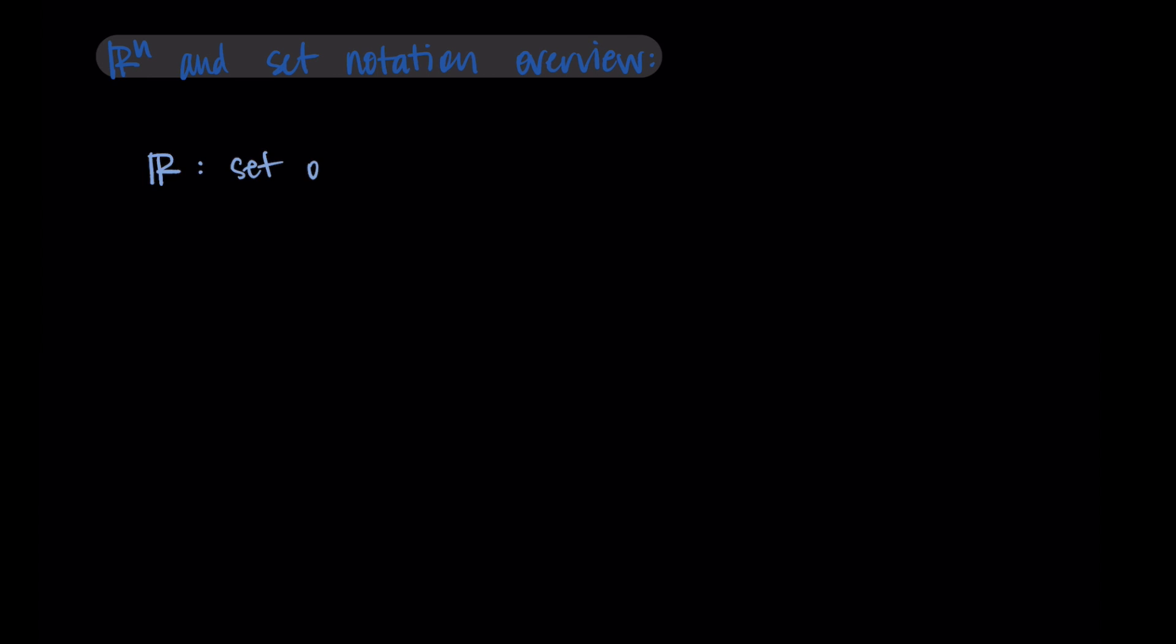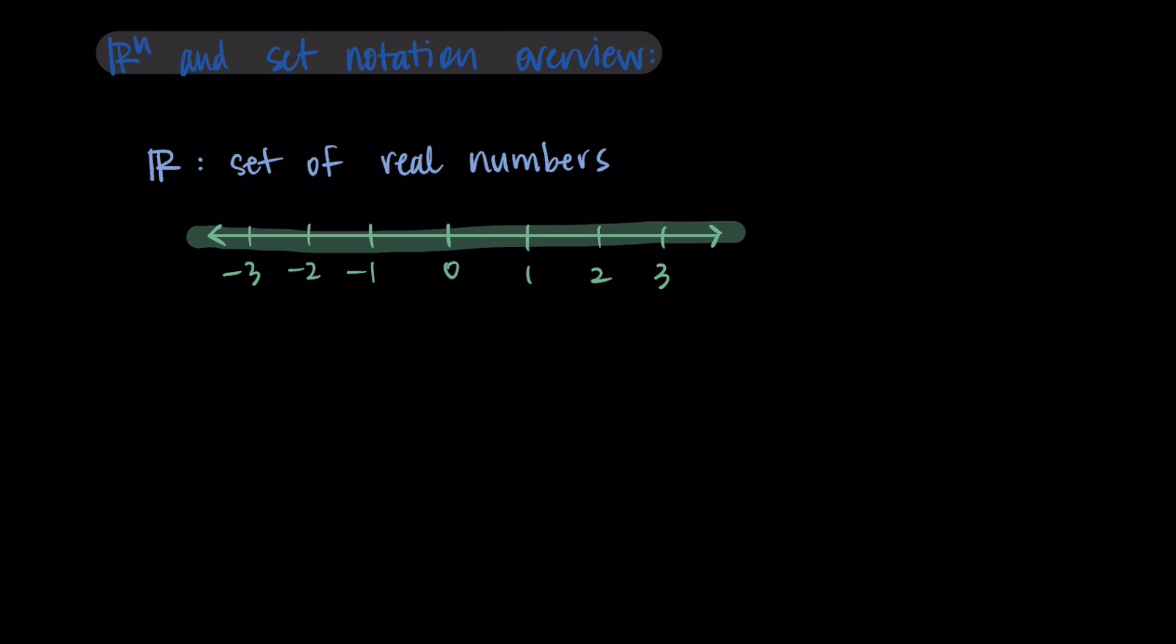So in general when we write ℝ, this is like a math R, so it has this double line. This represents the set of real numbers. I like to think of this as a number line. We could label it with like negative three through three just to represent that we're looking at a certain part of the number line, but we understand that this includes all real numbers.